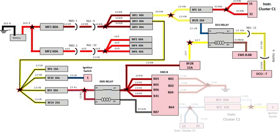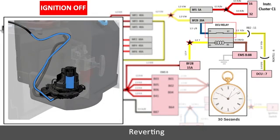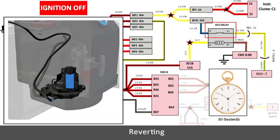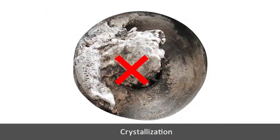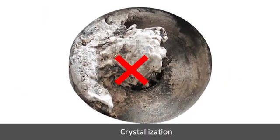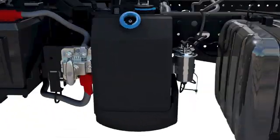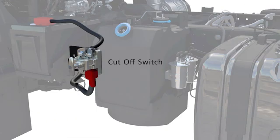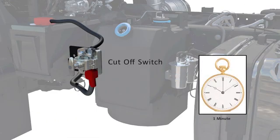Dosing pump has a reverting valve to reverse pump the DEF from the supply line after the ignition is switched off to avoid crystallization of DEF in supply line. Warning: after turning ignition off, wait up to one minute to turn off the battery cutoff switch.